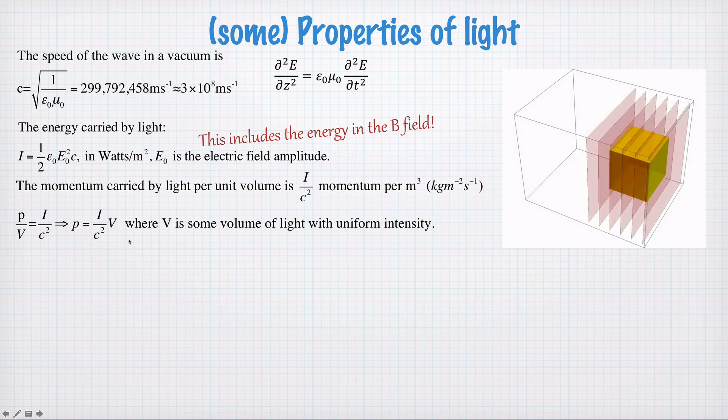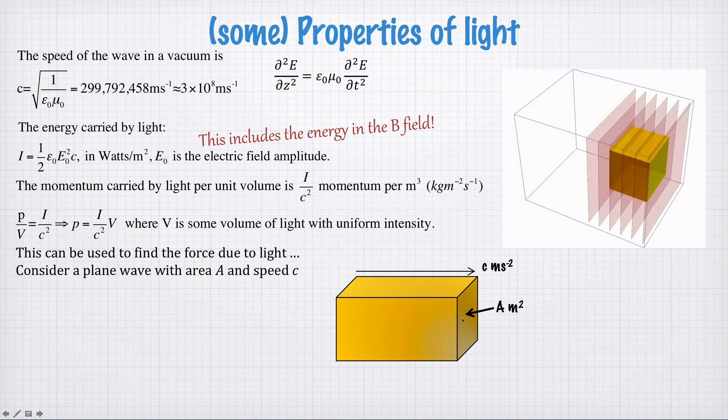Now if you have momentum in light and the light is absorbed, the light can exert a force. And this force is known as radiation pressure. So we can use it to find a force. We'll consider our yellow box of light again. The surface area here is A, and it's travelling at the speed of light, c.